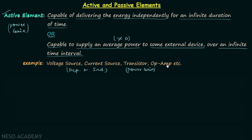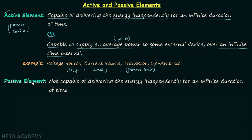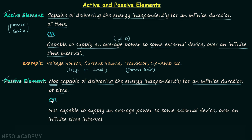Now we will move on to the definition of passive element. An element which is not capable of delivering energy independently for an infinite duration of time is known as a passive element. We can also define it as an element which is not capable of supplying an average power not equal to zero to some external device over an infinite time interval.